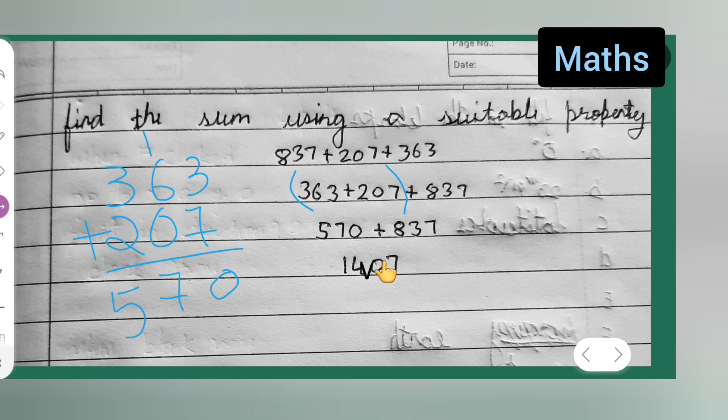Write it as it is, then add these 2 numbers. 570 plus 837.